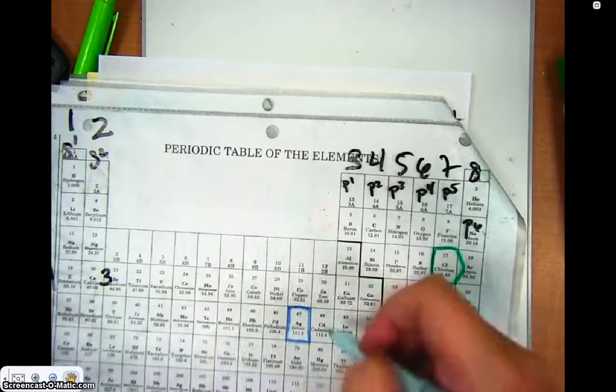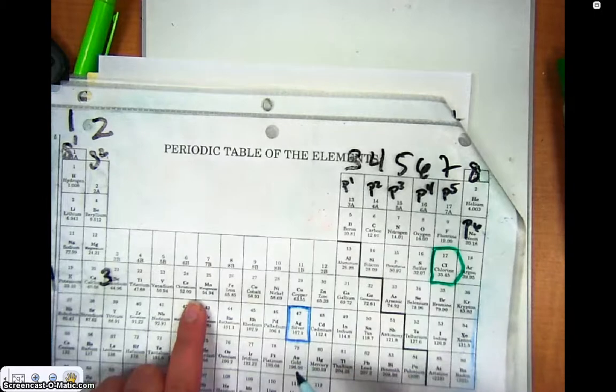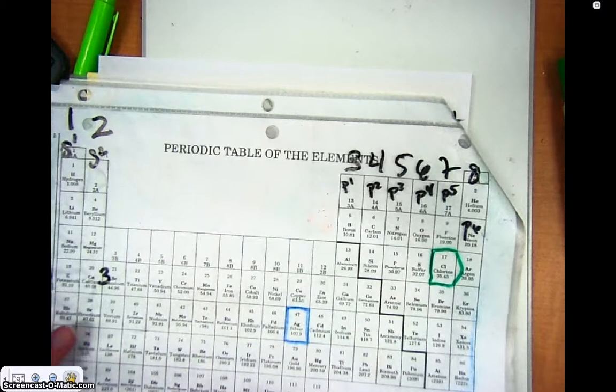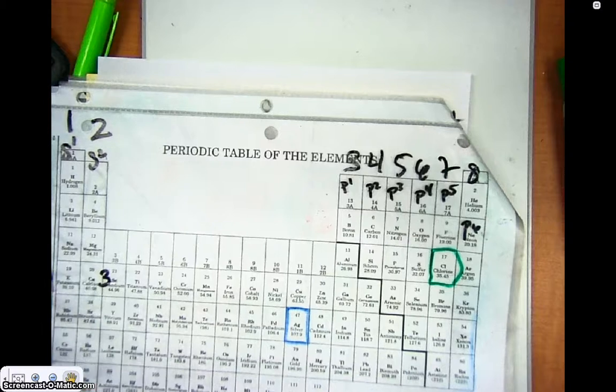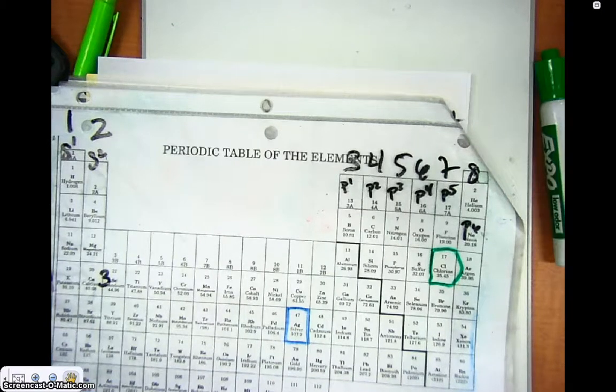So these Ds are in the previous energy level. So the fact that the S orbital of the next fills before the D of the previous makes it so the maximum number of valence electrons you can have is 8, right?